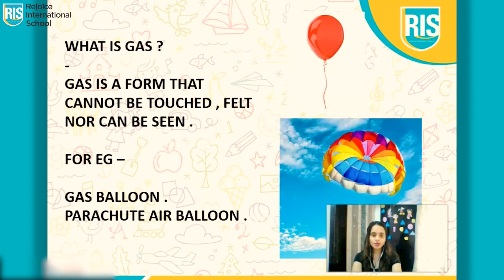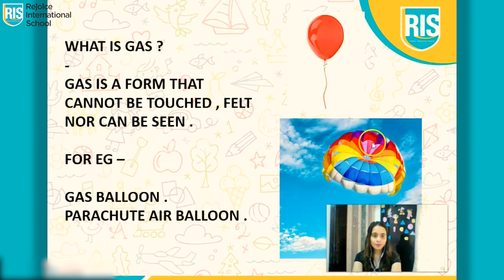Now let's see what is Gas. Gas is a form that cannot be touched, felt, nor can it be seen. To fill a gas balloon, what do we do? We fill the air. Can we see the air? No, we cannot see the air. We cannot touch or feel it. Over here, can you see the balloon and the parachute? For example, gas balloon and parachute air balloon — there is air inside that which we cannot see. You cannot feel it, nor you can touch it.